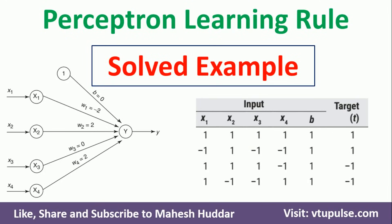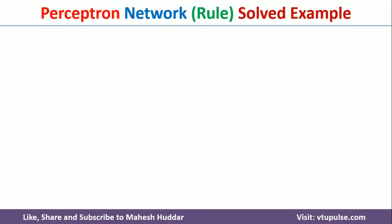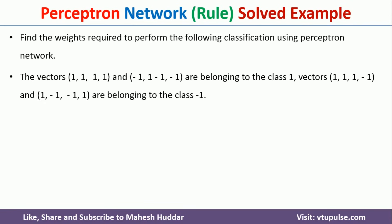Welcome back. In this video I will discuss how to use the perceptron learning rule to classify given data. We have four data points or vectors. The first is (1,1,1,1), the second is (-1,1,-1,-1) — these two belong to class 1. The next vector is (1,1,1,-1) and (1,-1,-1,1) — these two belong to class -1.